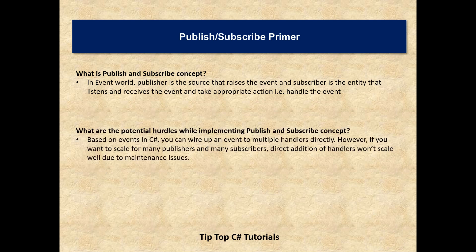So what are the potential hurdles while implementing publish and subscribe concept? As you may already know in C-Sharp, events can wire up to different handlers directly. But if you want to scale for many publishers — say in the order of 50 or 100 — and many subscribers receiving and handling those events, it will cause a maintenance issue. You have to maintain a list of all publishers and subscribers, and if you want to troubleshoot a certain event you have to go to the respective publisher and subscriber. That is a maintenance nightmare and one of the main hurdles.